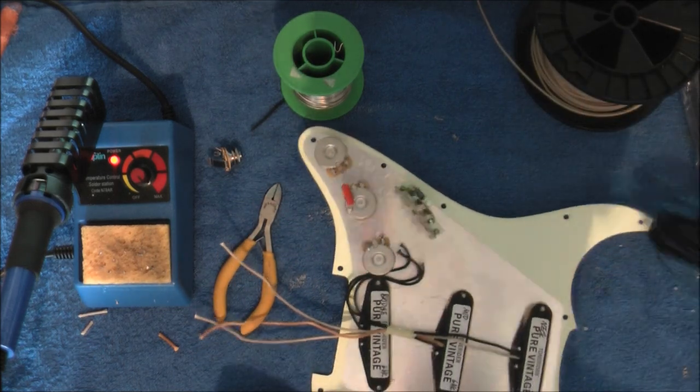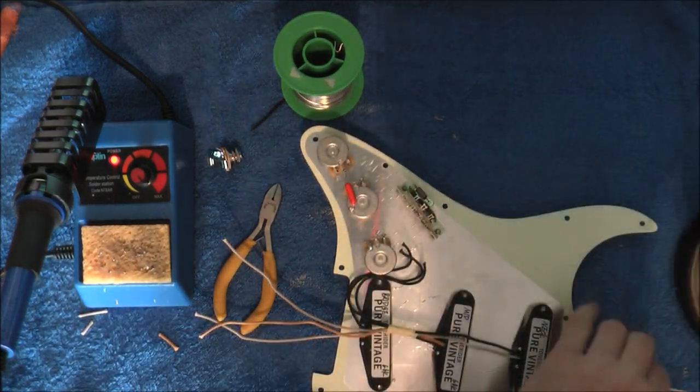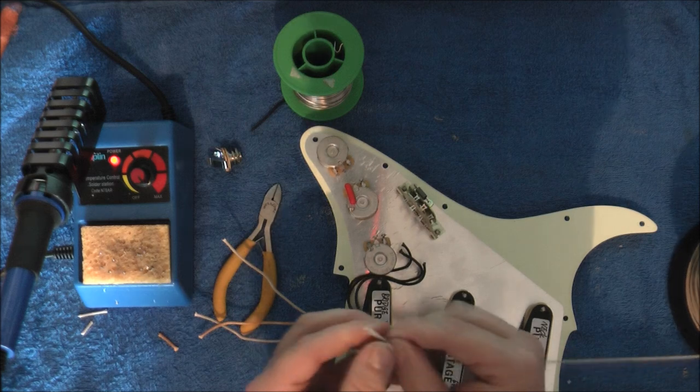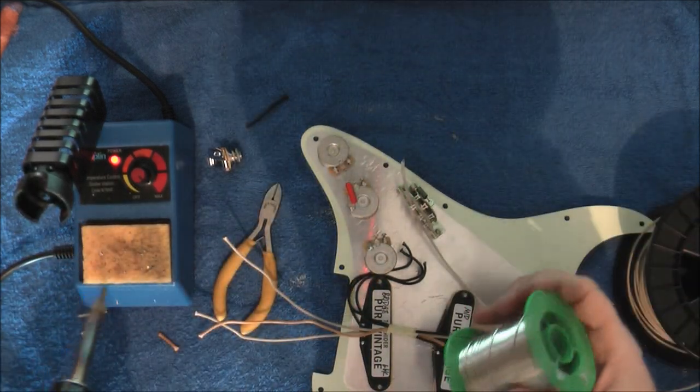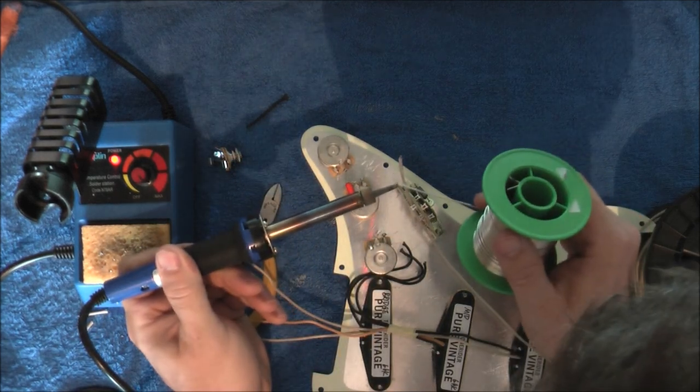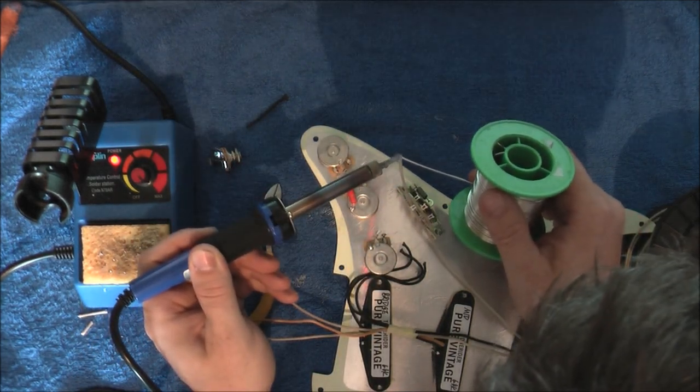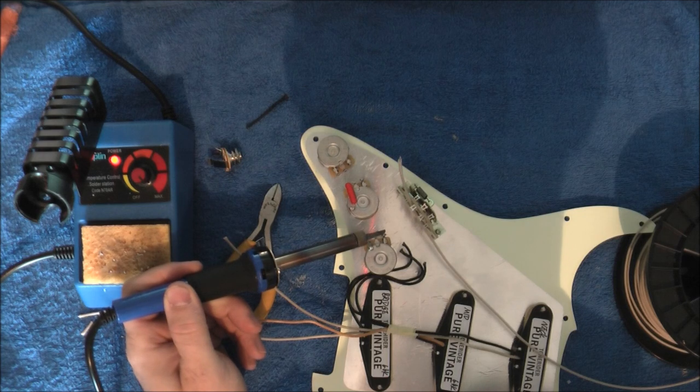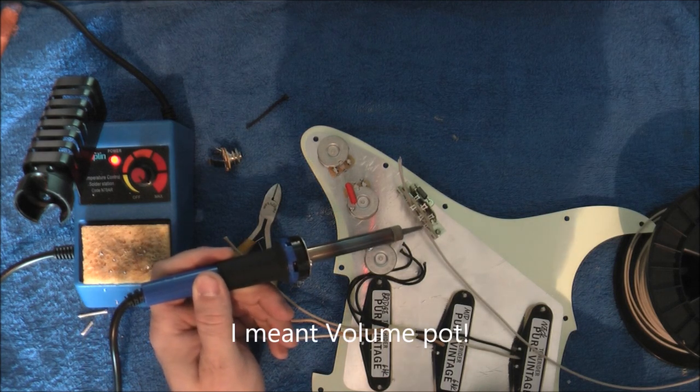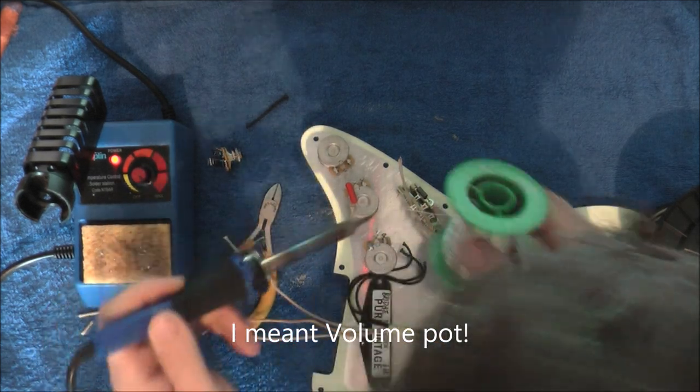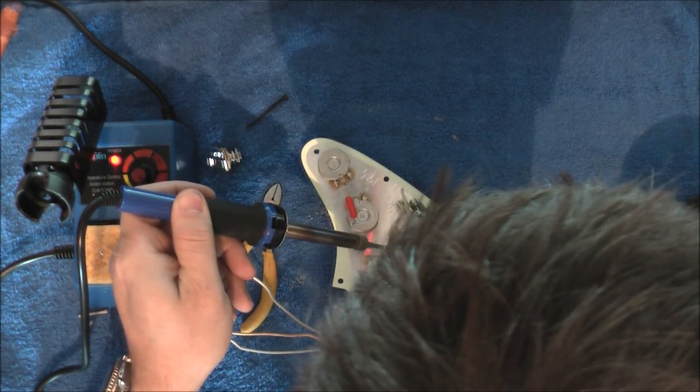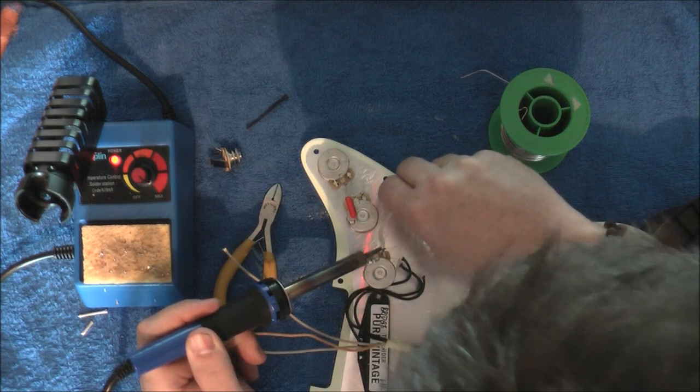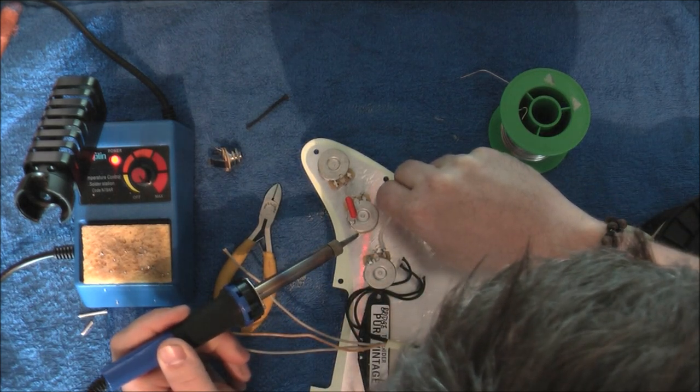Okay. So now it's time to wire the switch. Okay. So first things first. Always a good idea to tin these wires first. It just makes them a lot easier to solder to the pots and to the switch. Just a little bit on there. So this wire is going to go from the end lug of the tone pot to the first lug on the switch there, if you can see.